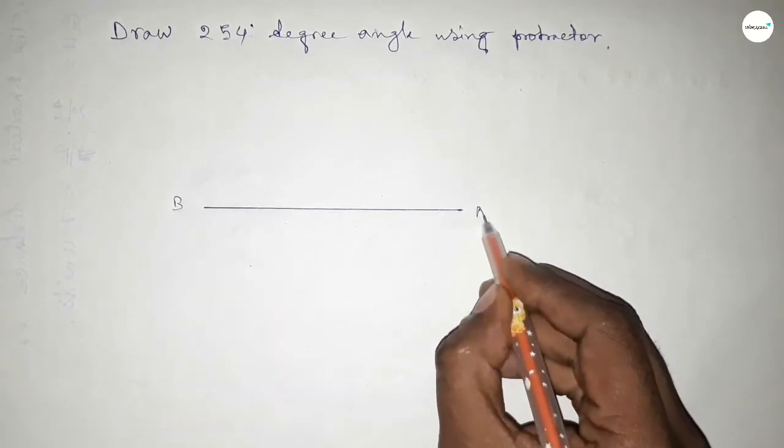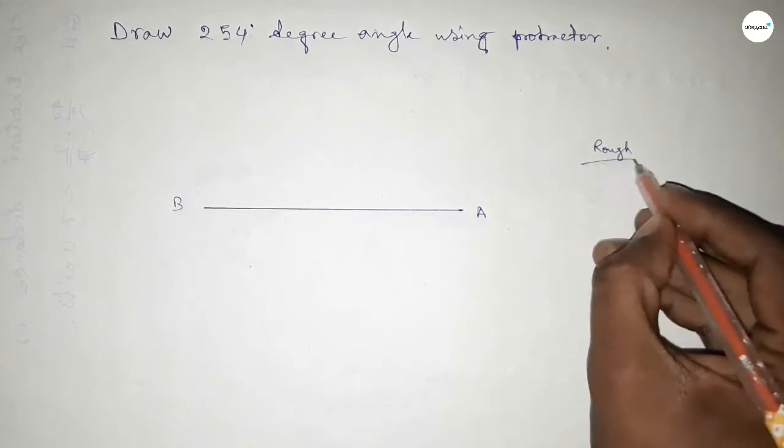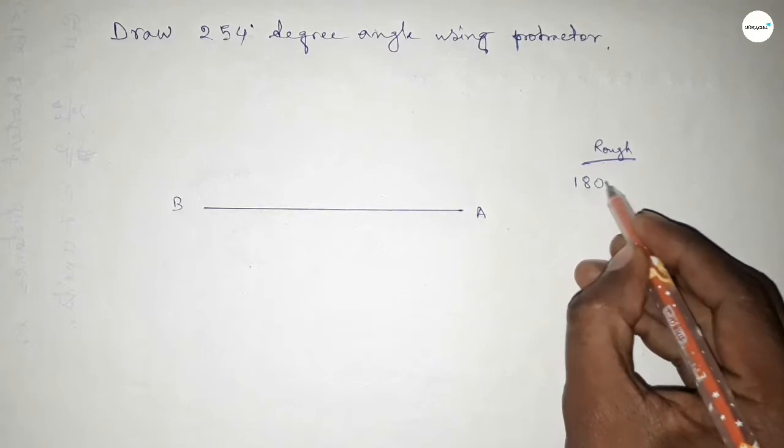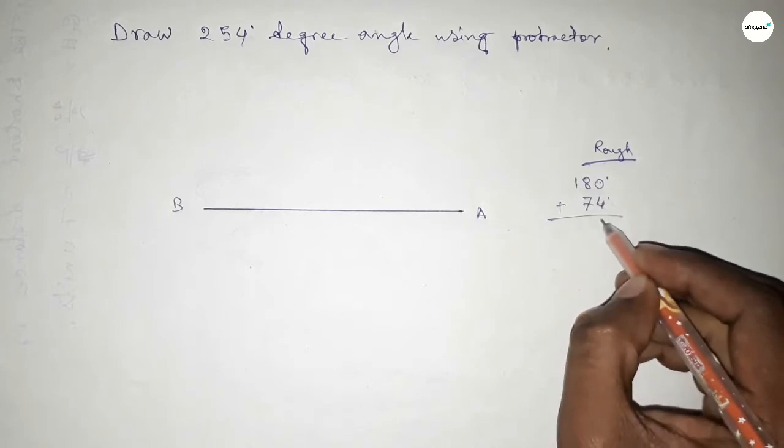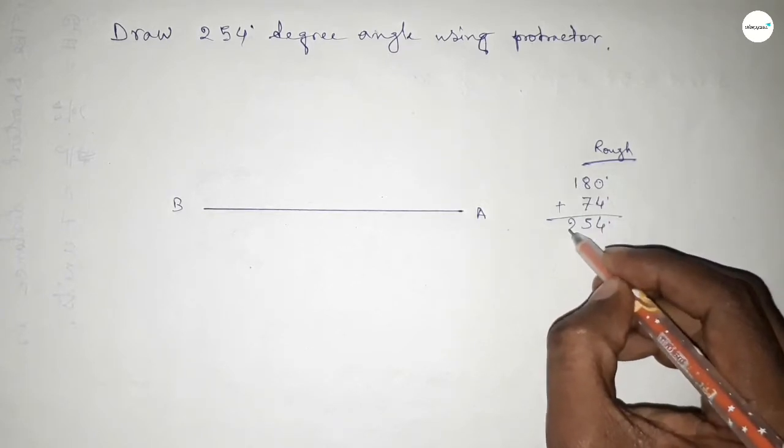Next, taking here B point and here A point. Now roughly discussing some calculation here. So if we add 74 degree angle with 180 degree, then we can get 254 degree angle. So this is 4, 15, 5 carry 1, so 2.